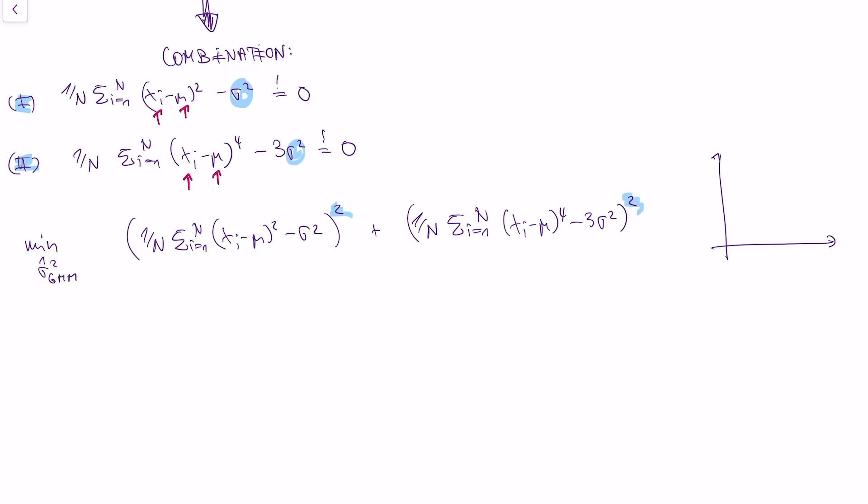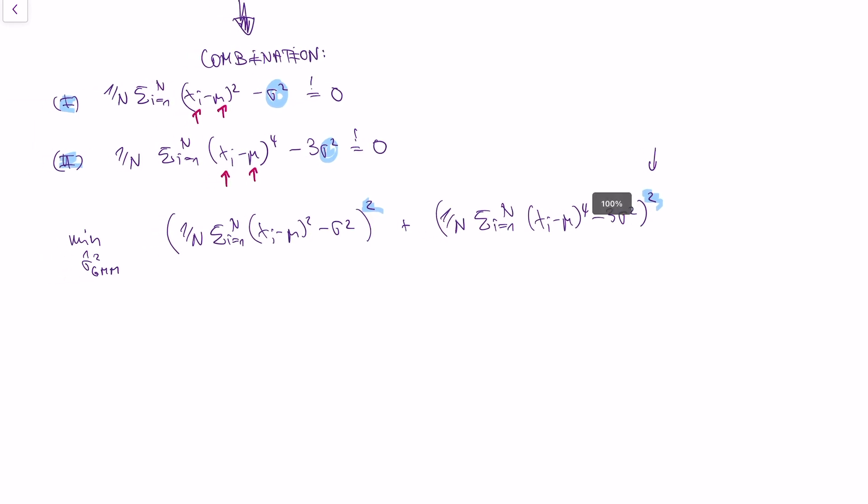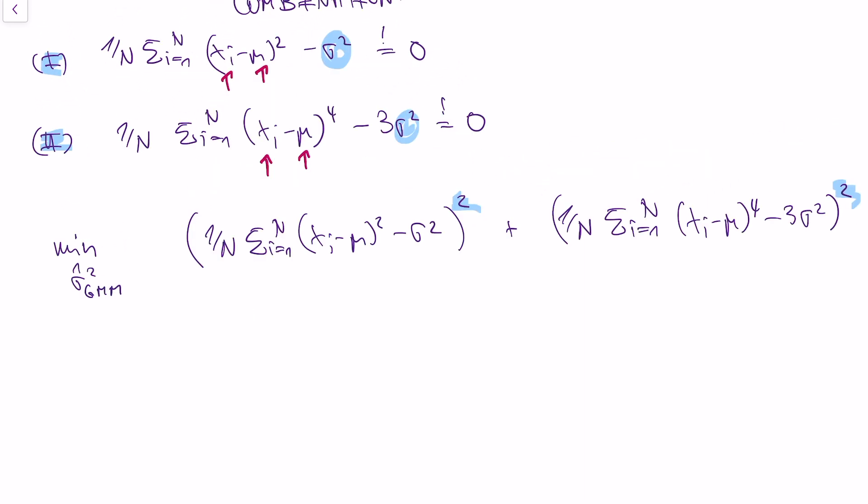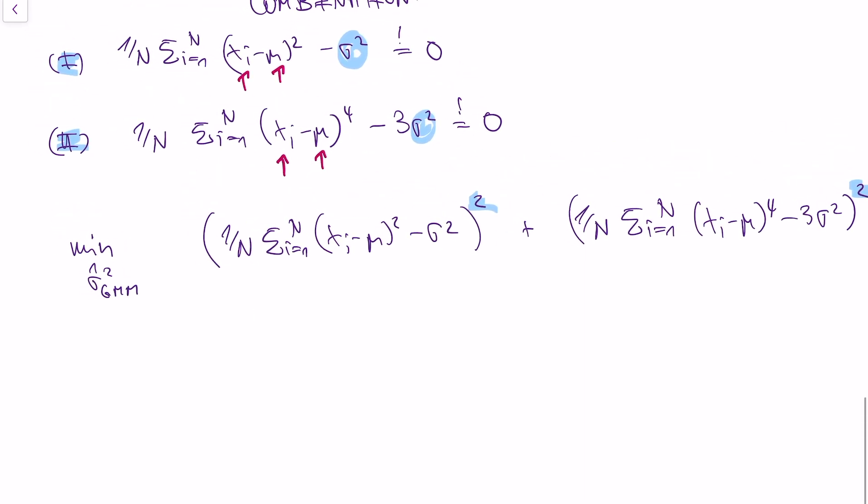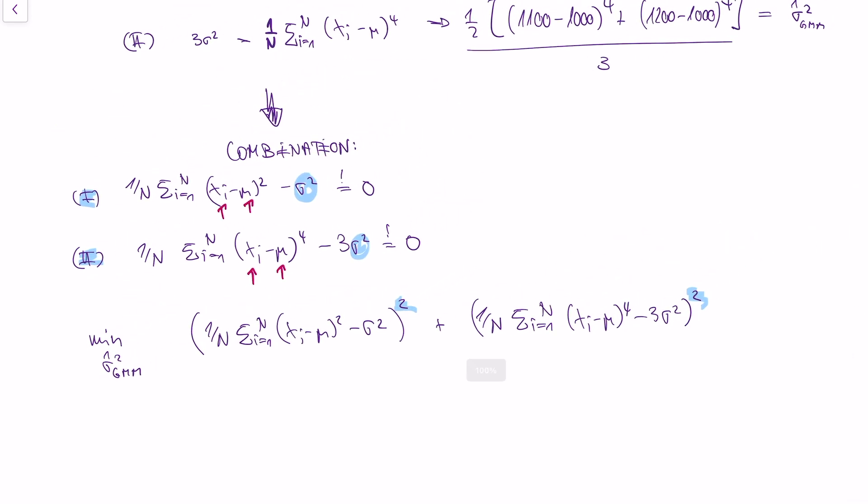And why do we use those squares? Well, what we don't want is we don't want a sigma that sets the first equation to minus 100 and the second equation to plus 100. So we get zero in total. This would be invalid, right? Because in the optimum, both of these equations should be zero. And we avoid this by just using the squares. Okay. And by solving this equation, actually, we find our method of moments estimator. So what would we have to do? Well, we would have to take first order conditions with respect to sigma. So we would have to take the first derivative with respect to sigma, set the first derivative equal to zero, and then find our method of moments estimator.